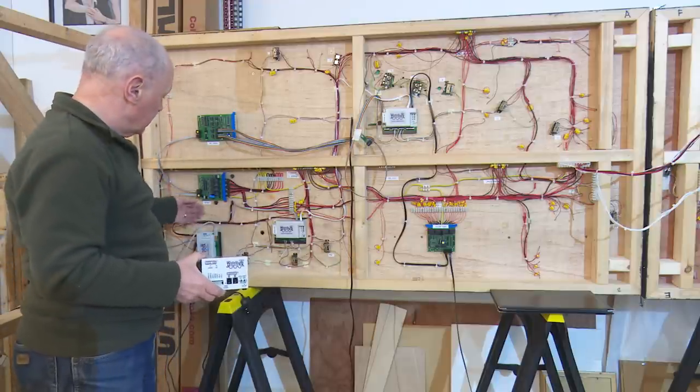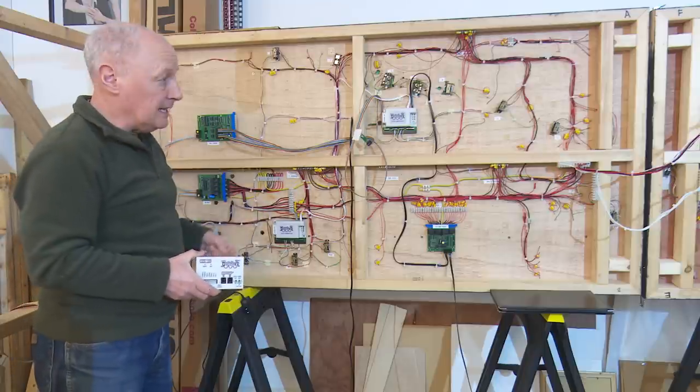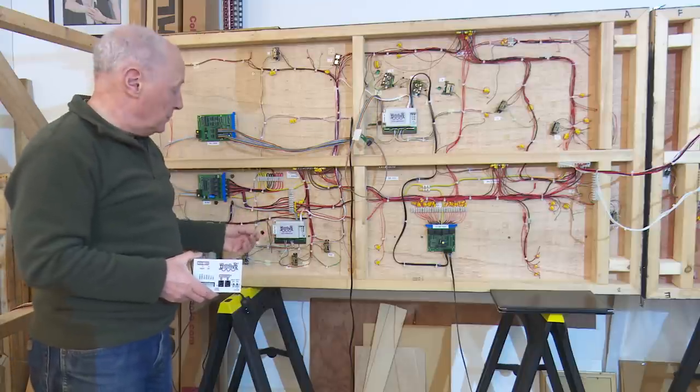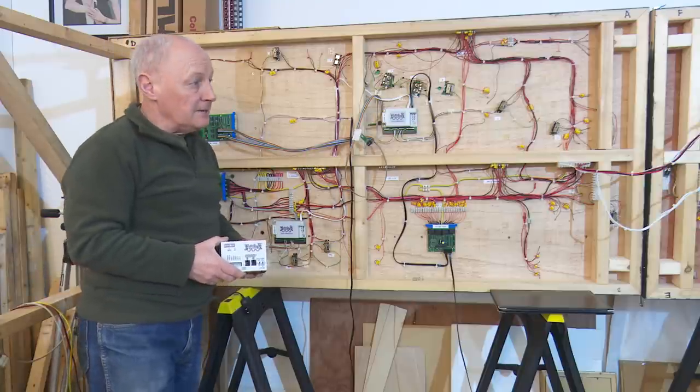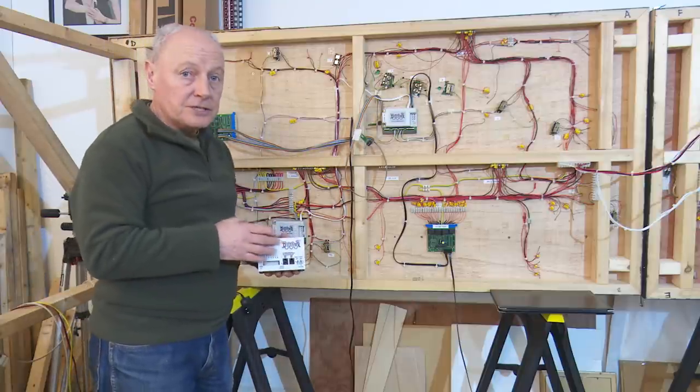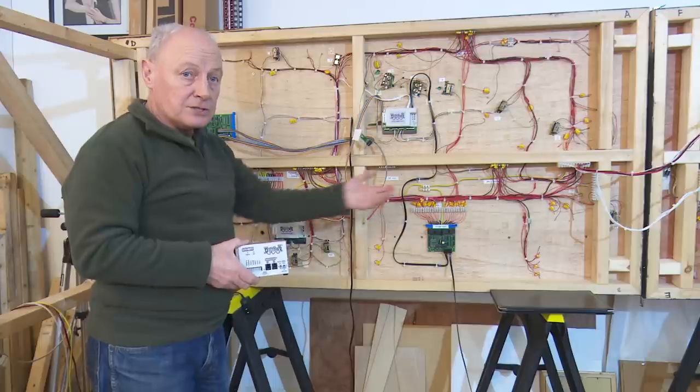So therefore all the functions that go on, all the signals are carried by LocoNet around the layout. It's all straightforward. Every single component is connected via LocoNet so the DCS-100 knows exactly what's happening right across the layout.